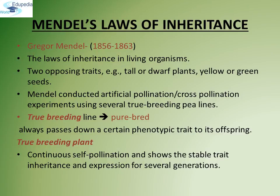The law of inheritance in living organisms was proposed by Mendel. He investigated characters in garden pea plants that were manifested as two opposing traits. For height, he studied tallness and dwarfness, and for color, he studied yellow and green color of the seed. Mendel conducted artificial pollination or cross-pollination experiments using several true breeding pea lines. A true breeding line is always called a pure breed — it always passes down certain phenotypic traits from parent to progeny.